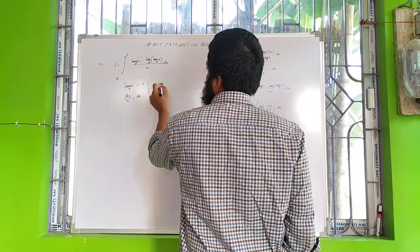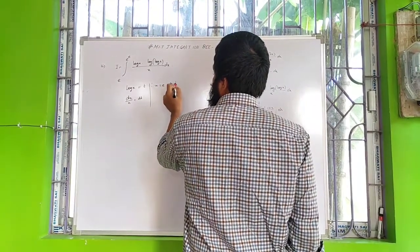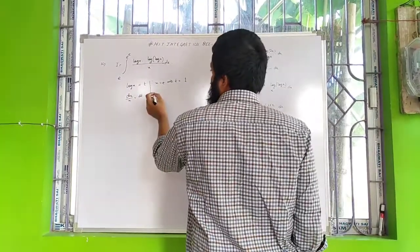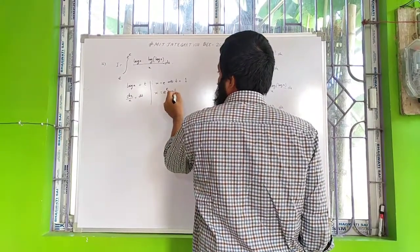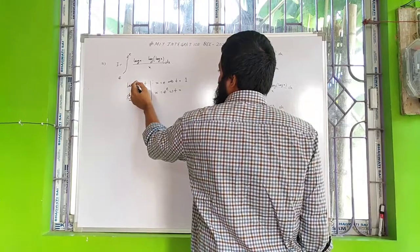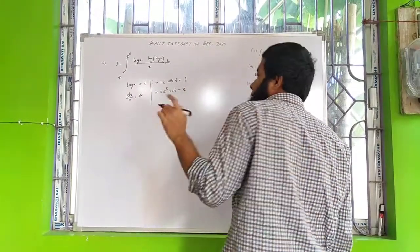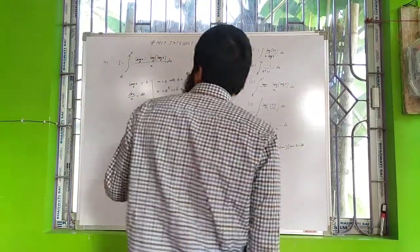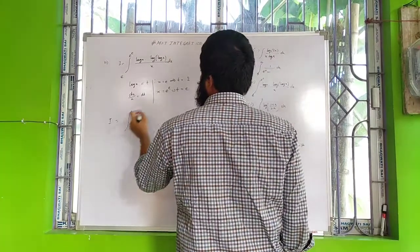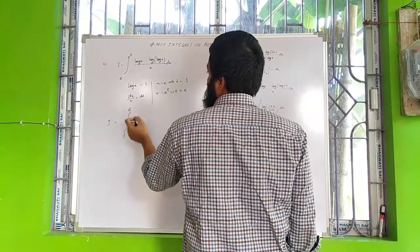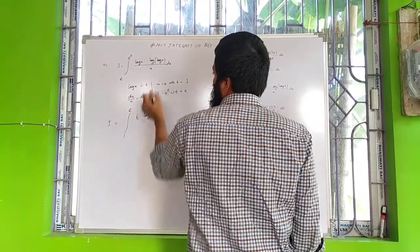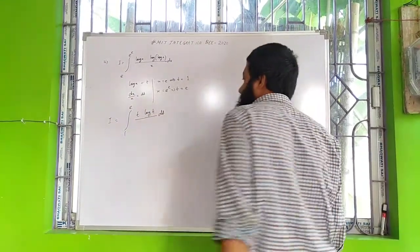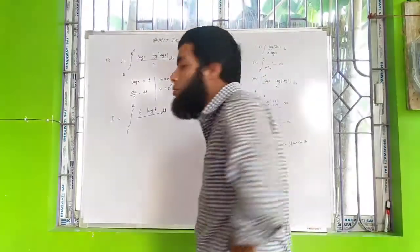When x = e, t = log e = 1. When x = e^e, t = log(e^e) = e, since log e = 1. So I is transformed to the integral from 1 to e of t · log t dt, where log x gives t, log(log x) gives log t, and dx/x gives dt. Now we need to use integration by parts to solve this problem.